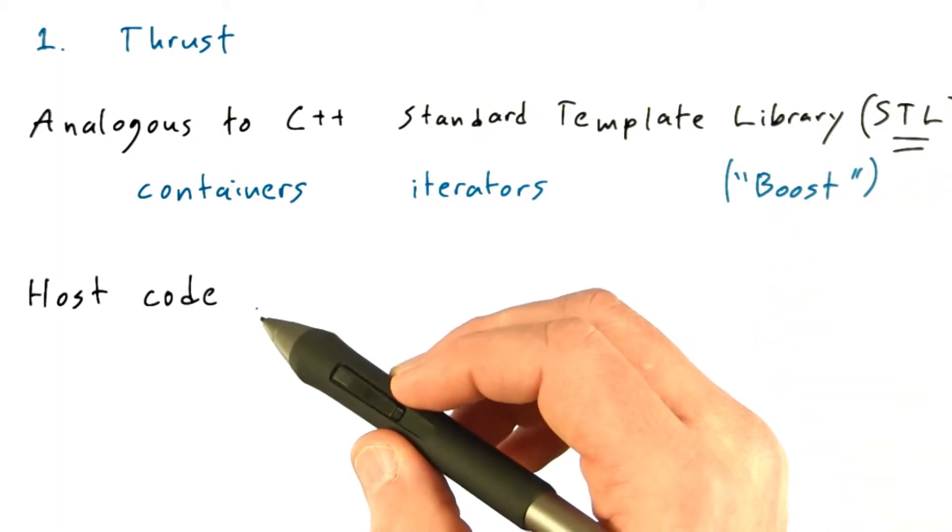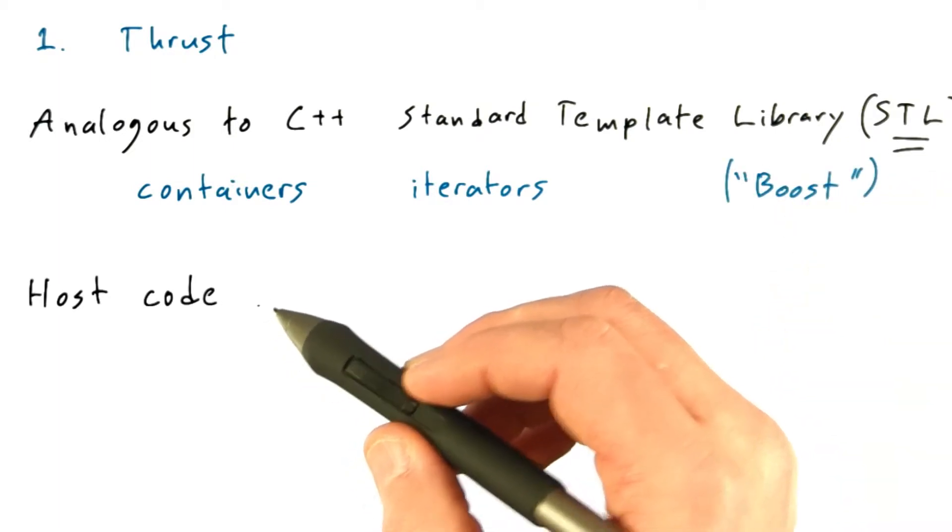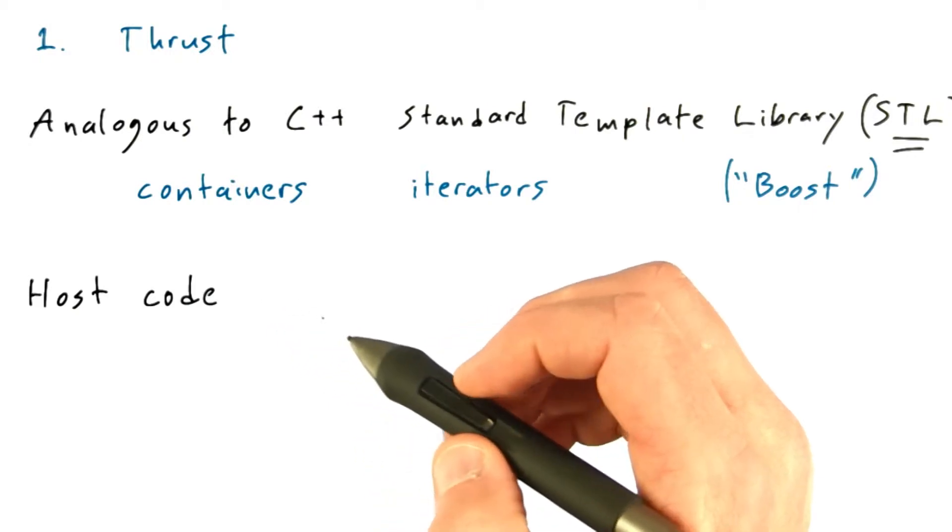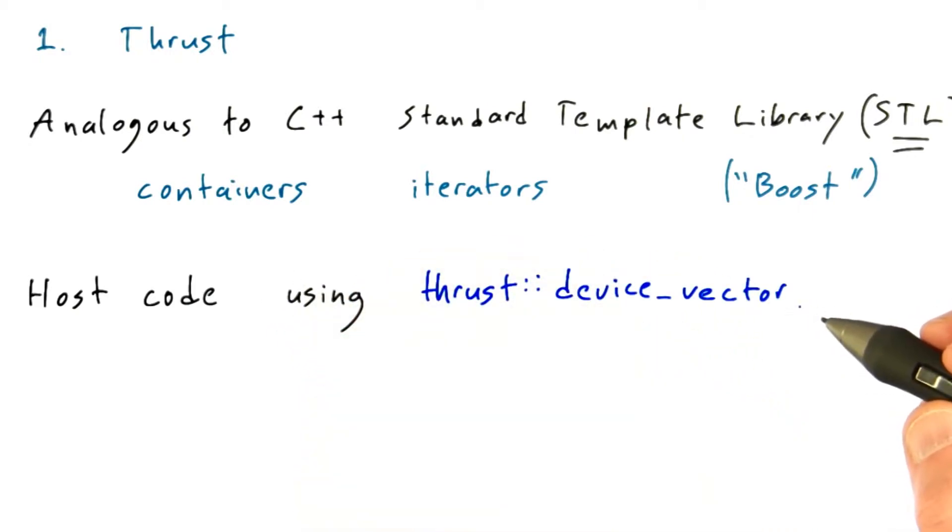Thrust allows host code that runs on the CPU to very easily create and manipulate data on the GPU. The principal container abstraction in Thrust is device vector.